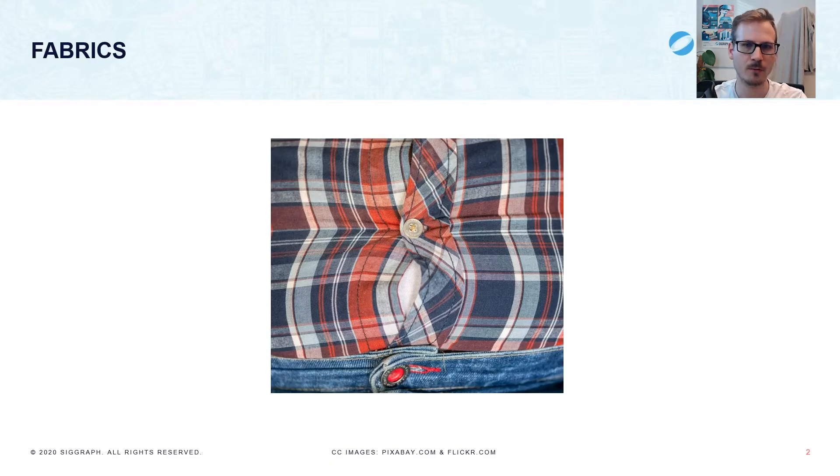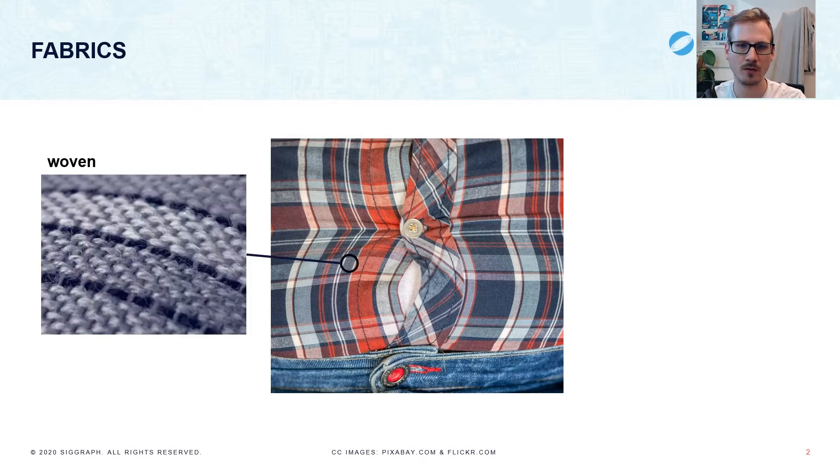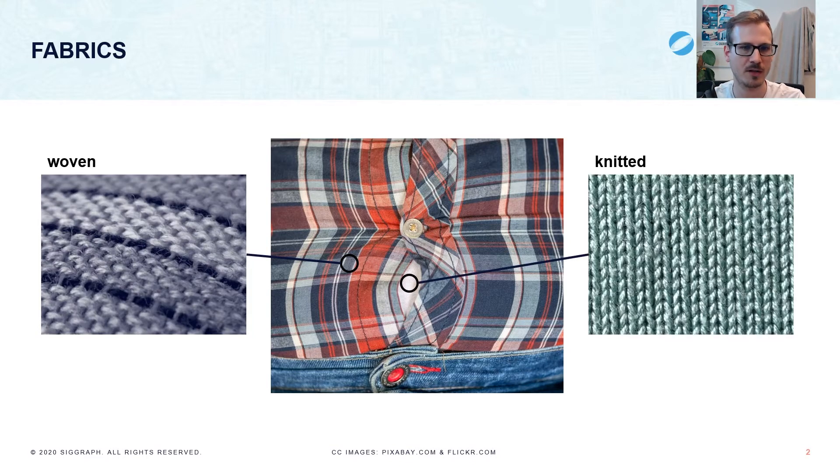The fabrics we use and wear in everyday life have very different properties. For example, woven cloth does not stretch a lot and generally results in a tighter fit. On the other hand, knitted cloth is much more stretchy and fits a bit more comfortably. So what's interesting is that just by constructing the fabric from a different yarn structure, you can get a completely different elastic behavior.